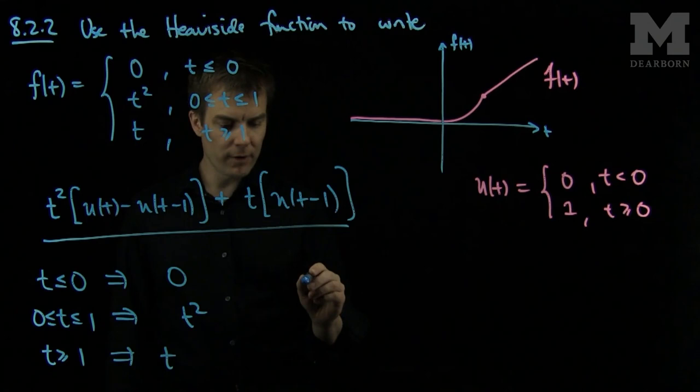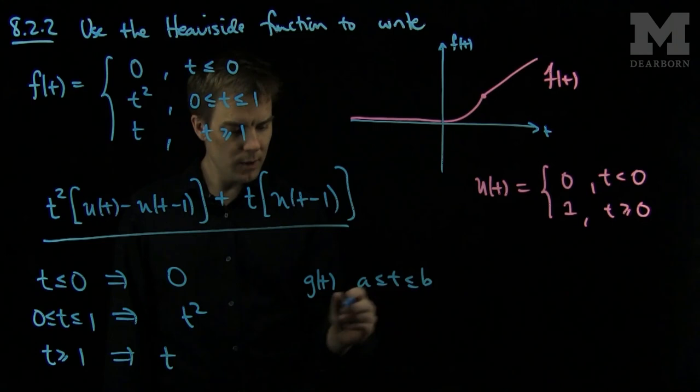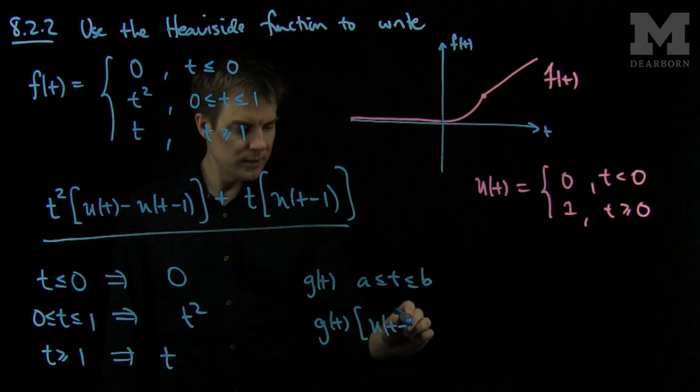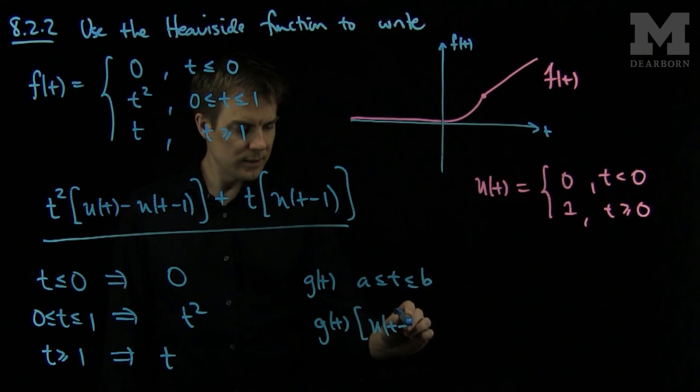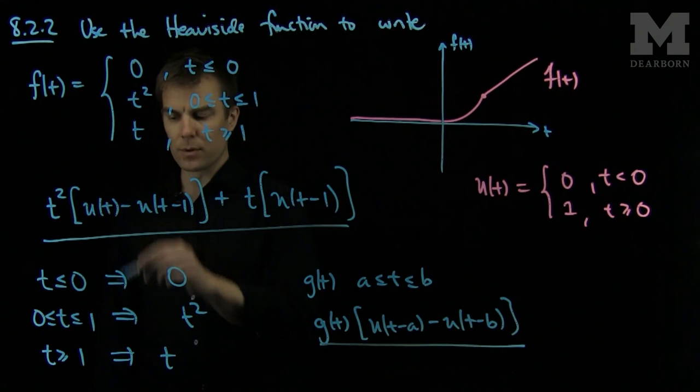And so generally, if you have a function that's defined as g of t on the interval t between a and b, you can say that this will be g of t times u of t minus a minus u of t minus b, and this is the formula we used two times in this problem. Thank you very much.